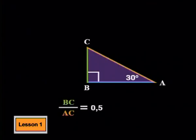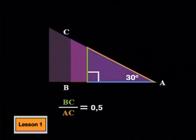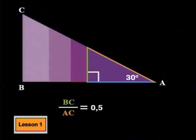So if we keep this angle at 30 degrees and this angle at 90 degrees, we can change the lengths of the sides, but the ratios of the sides will still have the same constant value.